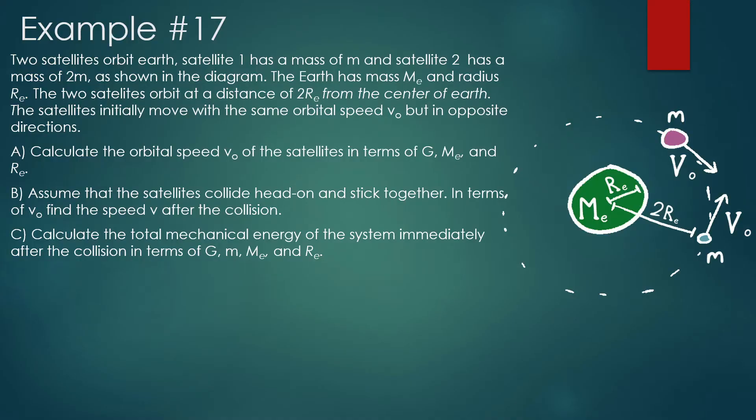So two satellites orbit Earth. Satellite 1 has a mass of m, and satellite 2 has a mass of 2m. As shown in the diagram, the Earth has a mass of M_e and a radius r_e. The two satellites orbit at a distance 2r_e from the center of Earth. The satellites initially move with the same orbital speed v_initial, but in opposite directions.